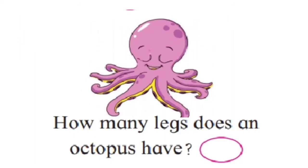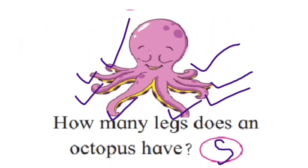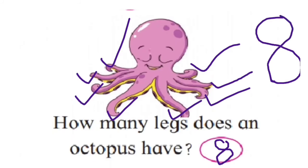What is this? Which animal is this? This is an octopus. Tell me, how many legs does an octopus have? Let's count: one, two, three, four, five, six, seven, and eight. An octopus has eight legs. Write eight. How to make eight — first make an S and join the ends. Write like this.